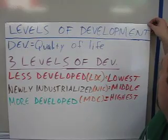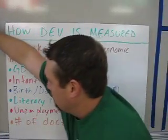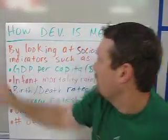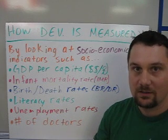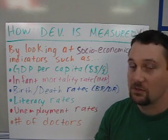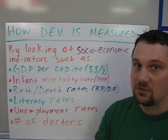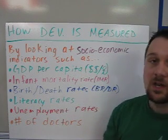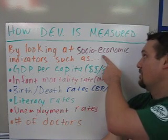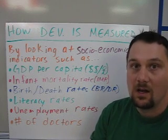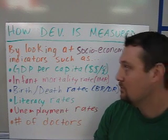So let's look at how we measure development. We look at socioeconomic indicators. What socioeconomic means is simply a mix of social — hence socio — and economic, like money-related things. That's why we call them socioeconomic indicators.